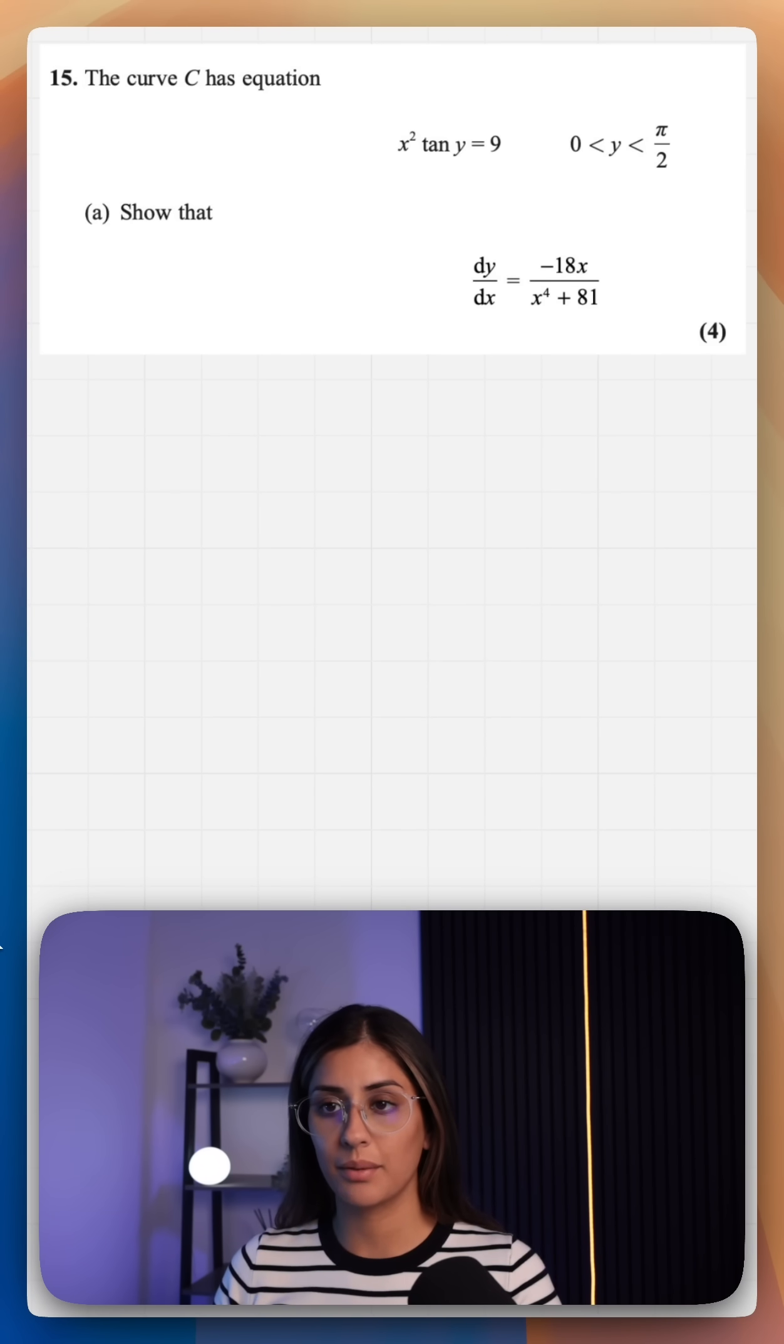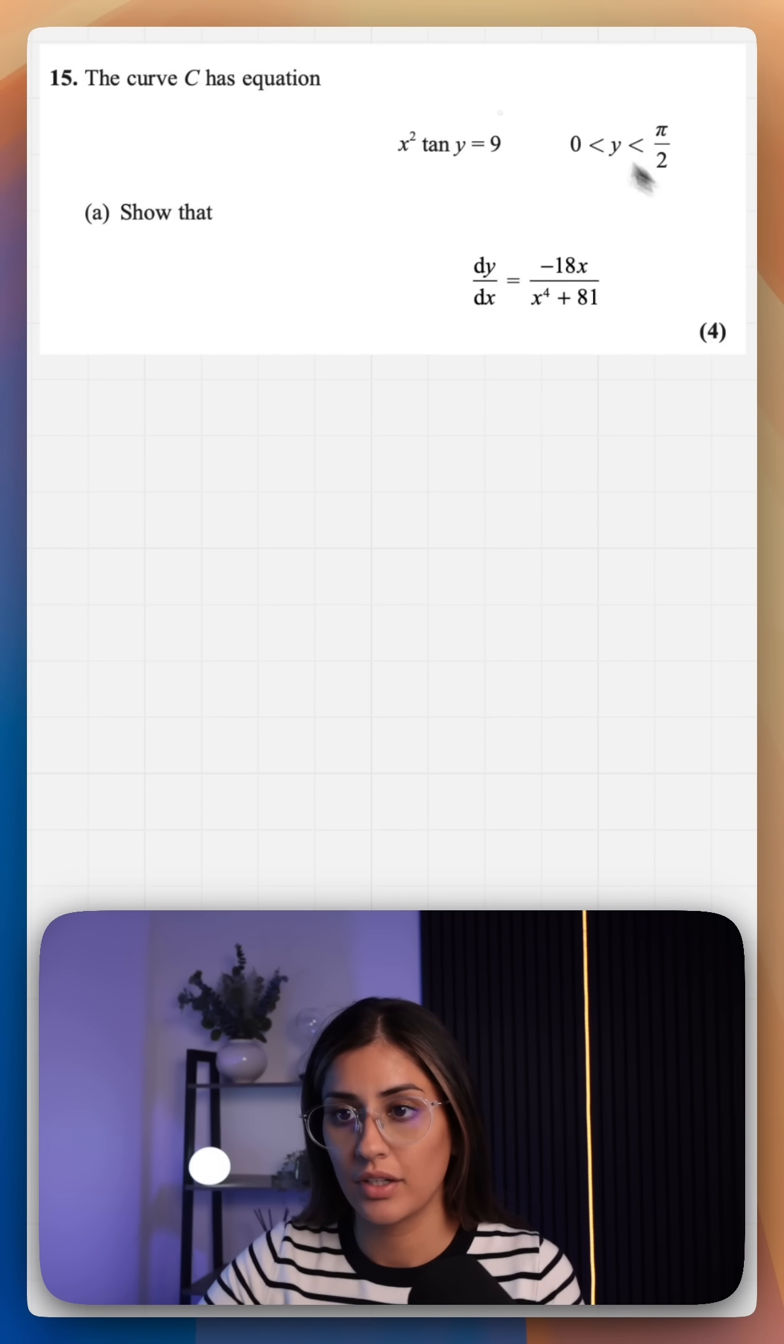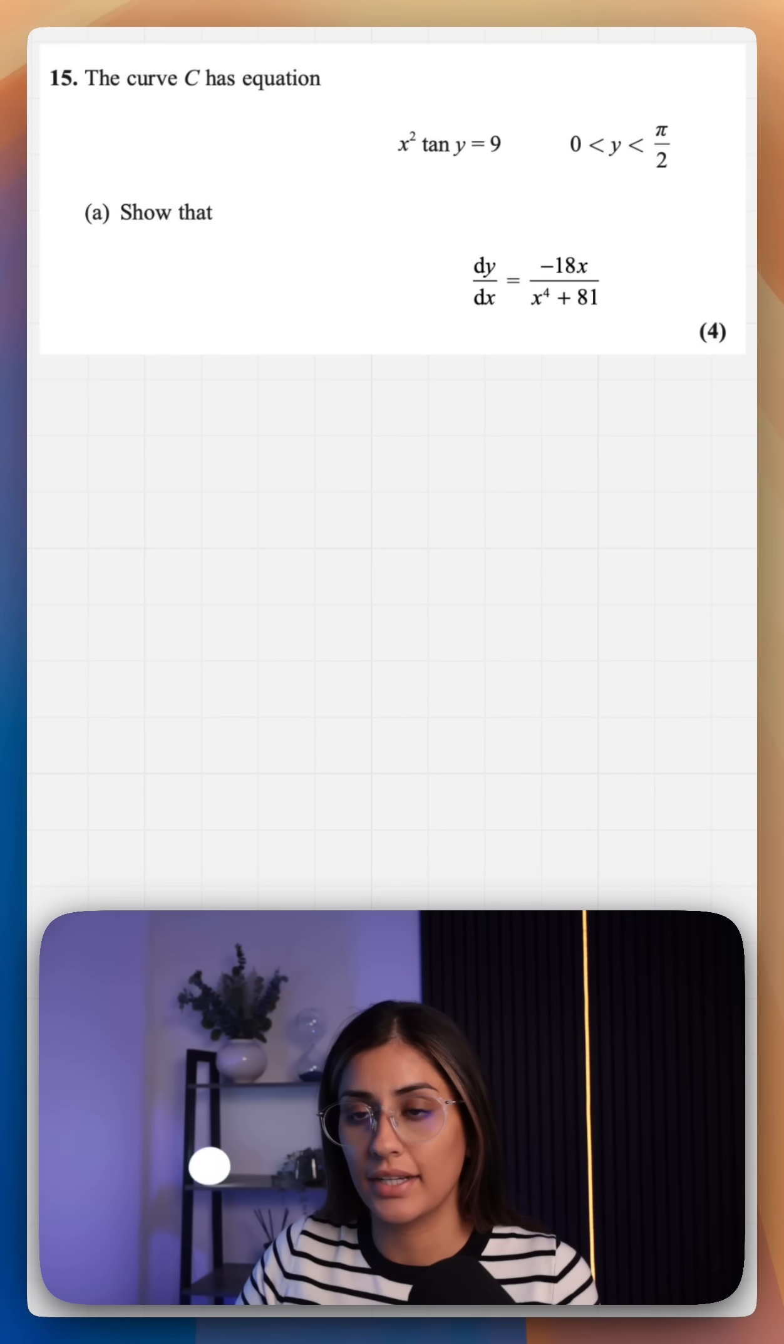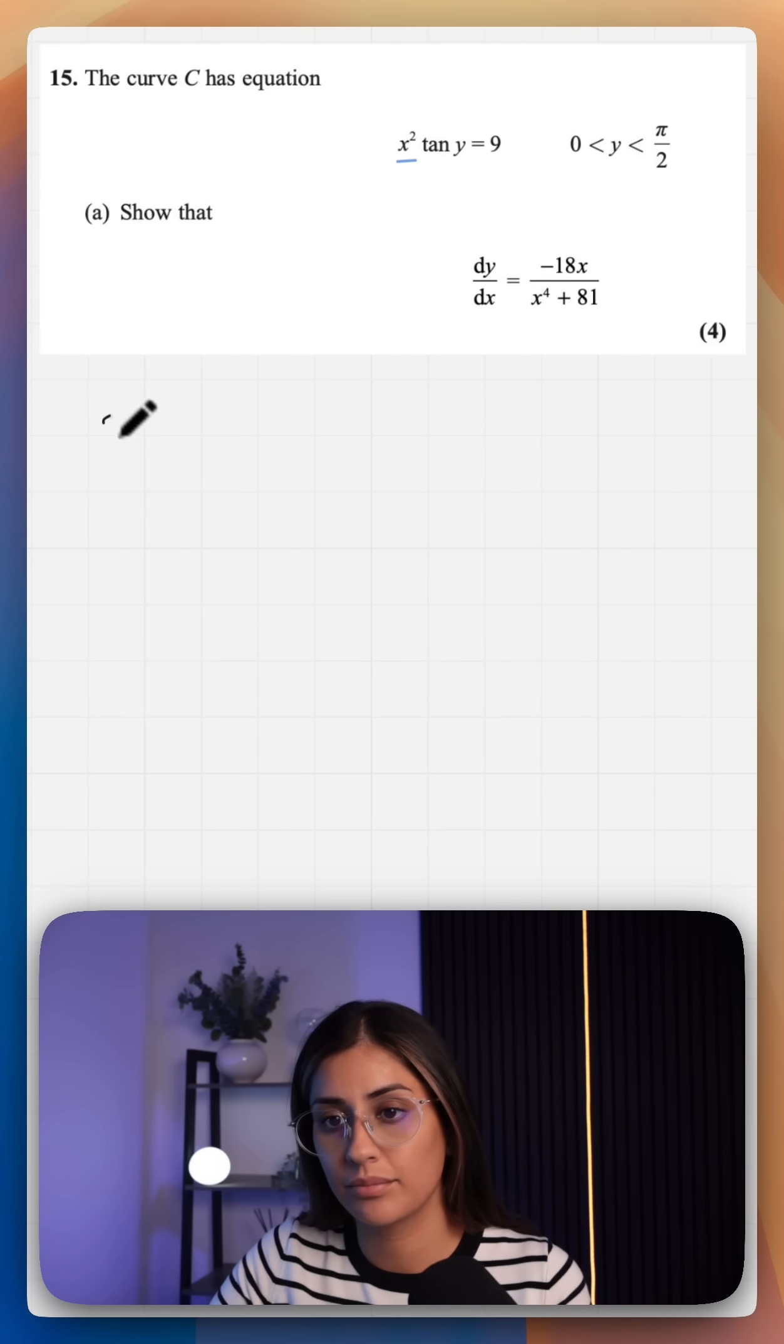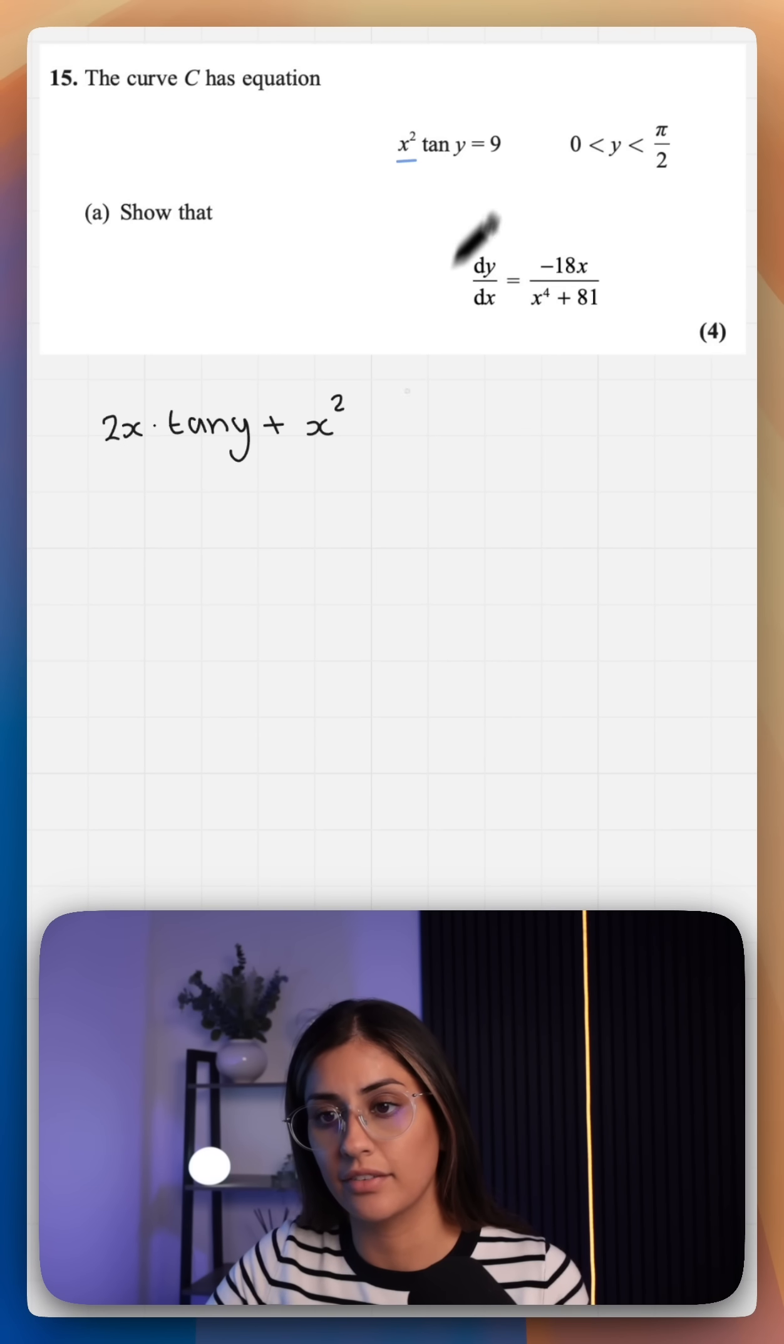This is a 4 mark trig implicit differentiation question. What we want to start by doing is differentiate our x squared and times that by tan y, plus x squared times our derivative of tan y which is sec squared y.